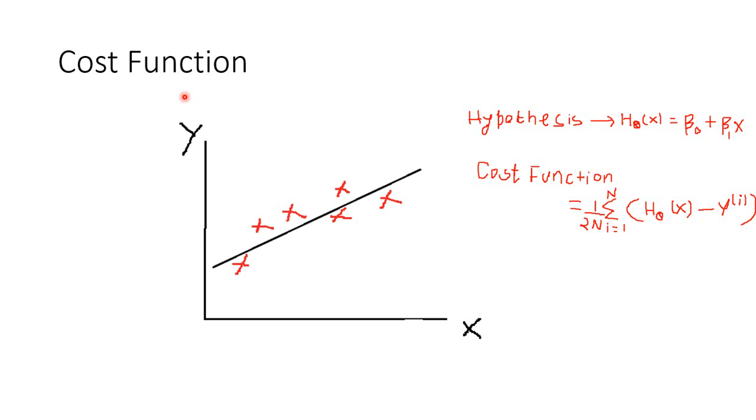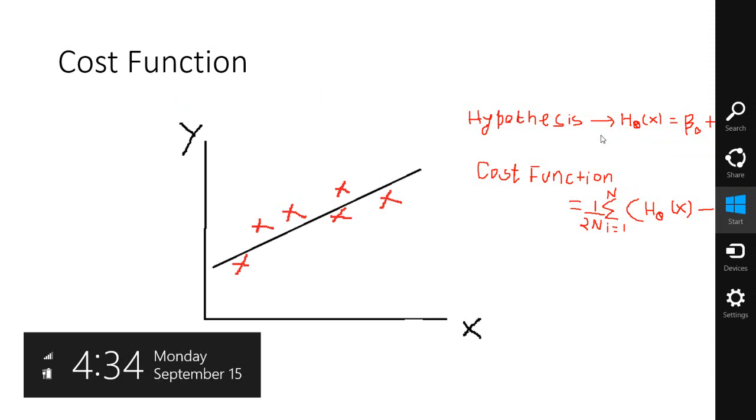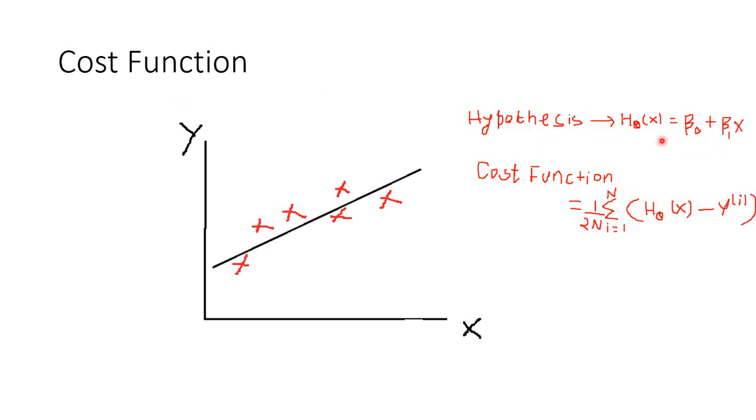We have studied what a regression equation is. The right-hand side of the regression equation, which is beta0 plus beta1x, is the line otherwise known as hypothesis. We denote it as h(x). The hypothesis is a function of x with parameters beta0 and beta1.